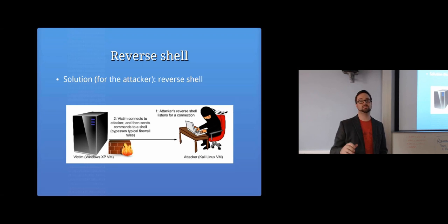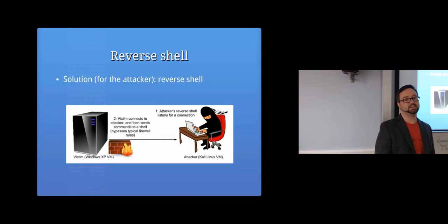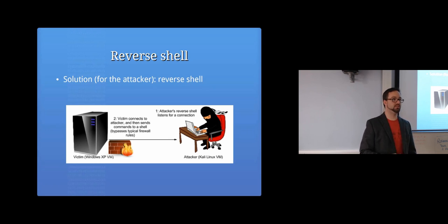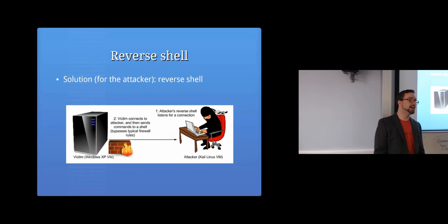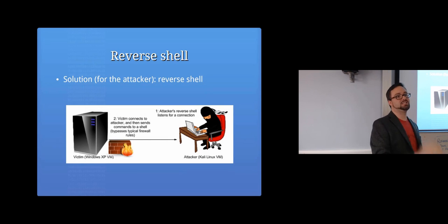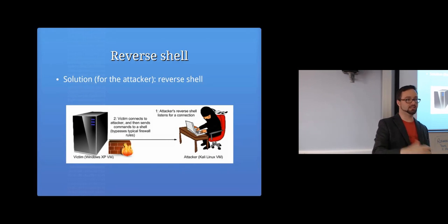The solution is to create a reverse shell payload. The attacker opens a port on their own system and listens, then the payload from the exploit creates an outgoing connection from the victim computer back to the attacker. This subverts firewall rules because most firewalls allow outgoing connections — and if you're listening on port 80, hardly any firewall will block that since users need to browse the web. The attacker then has a command prompt and communication flows both ways.